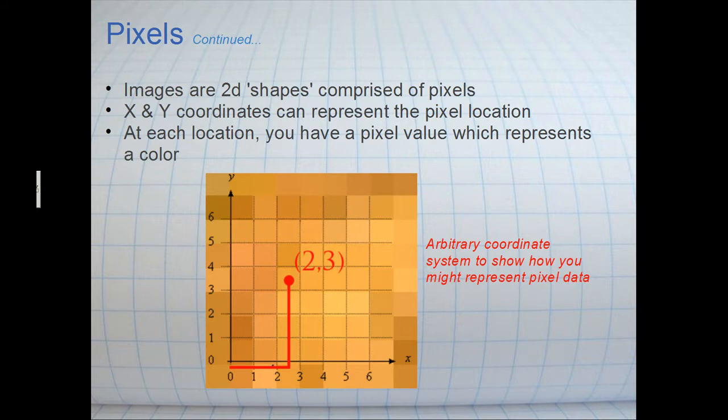So if you wanted to think of it as a coordinate system, each pixel would have sort of a location or a coordinate. And in that coordinate, you would also have information on the color of the pixel. And really, it's that simple when we talk about 2D pixel representation.